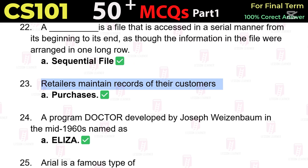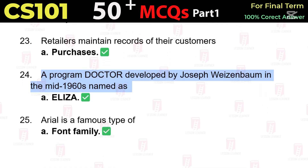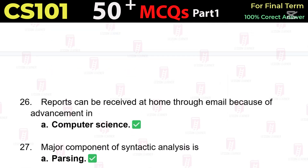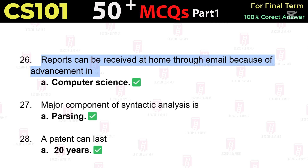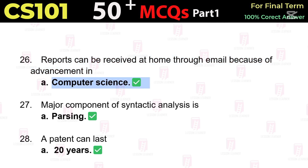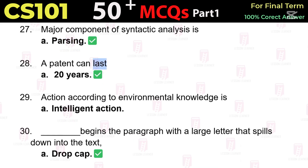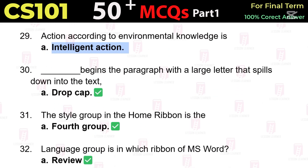Retailers maintain records of their customers' purchases. A program called Eliza was developed by Joseph Weizenbaum in the mid-1960s. Arial is a famous type of font family. Reports can be received at home through email because of advancements in computer science. The major component of syntactic analysis is parsing. A patent can last 20 years.